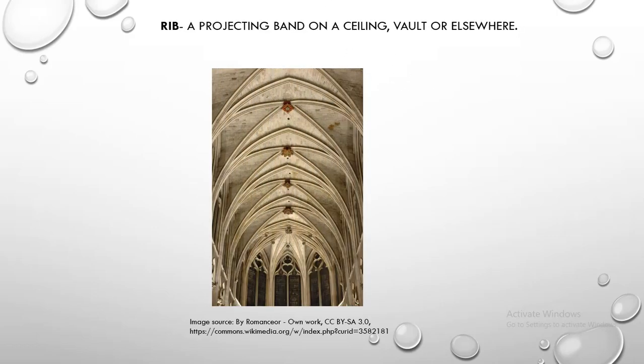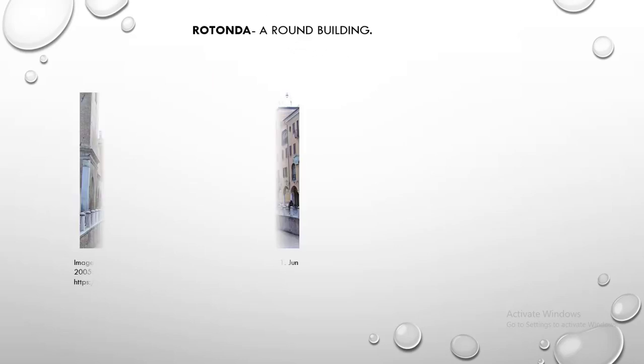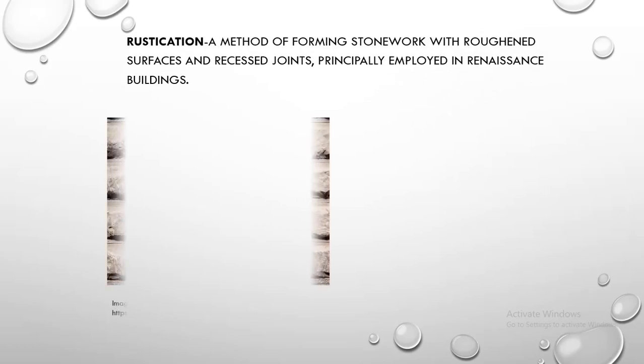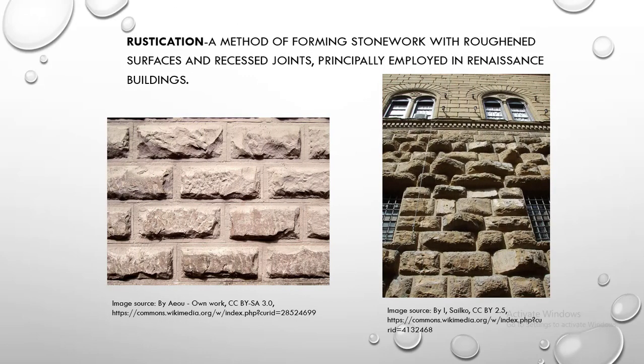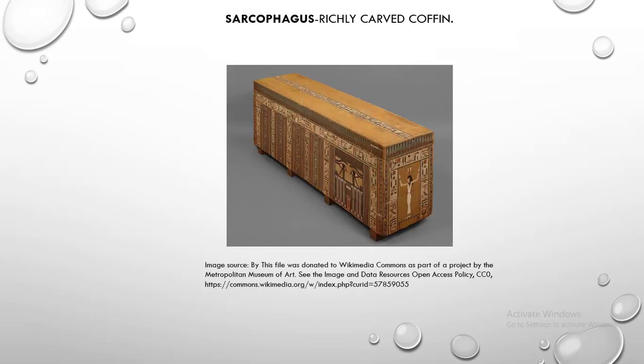Ribs. Ribs are projecting bands on a ceiling, vault, or elsewhere. Rotunda. Rotunda is a round building. Rustication. Rustication is a method of forming stonework with roughened surfaces and recessed joints, principally employed in Renaissance buildings. Sanctuary. Sanctuary is the most sacred part of a church or temple. Sarcophagus. Sarcophagus is a richly carved coffin.